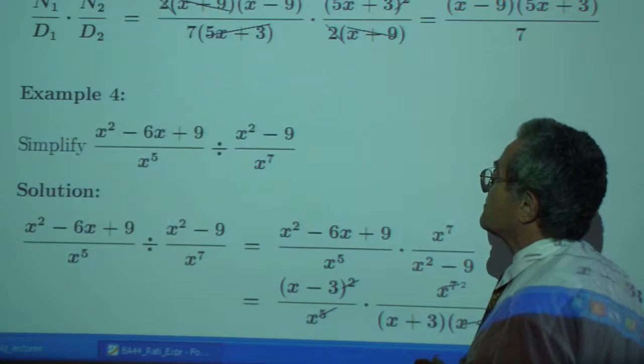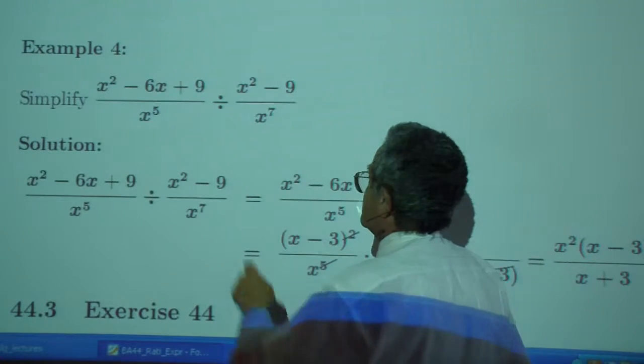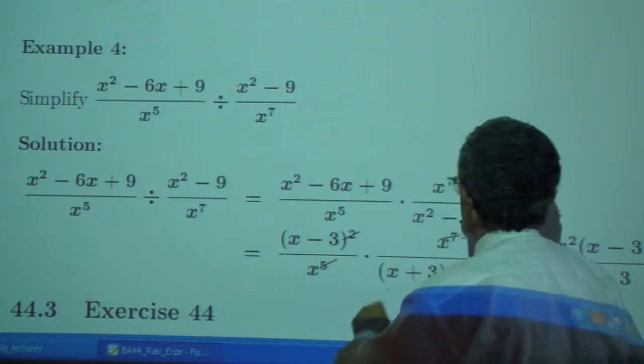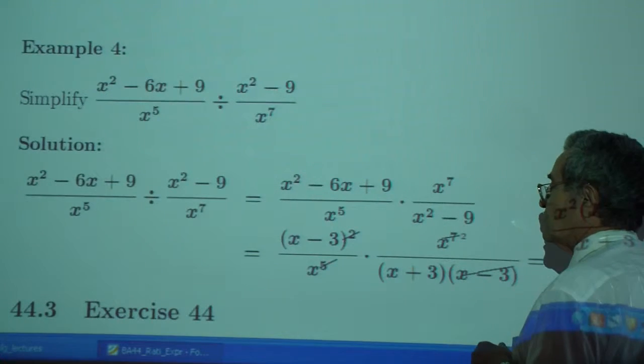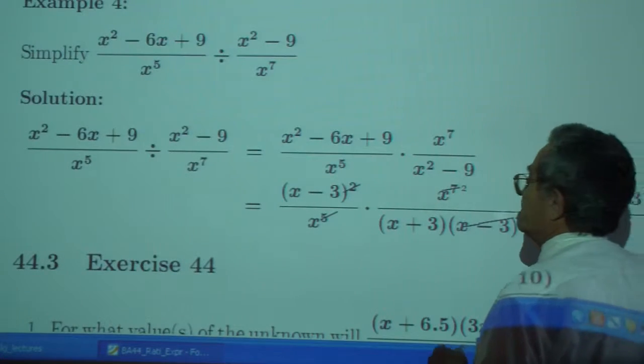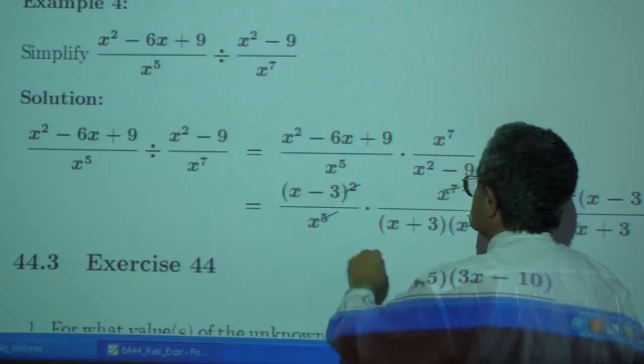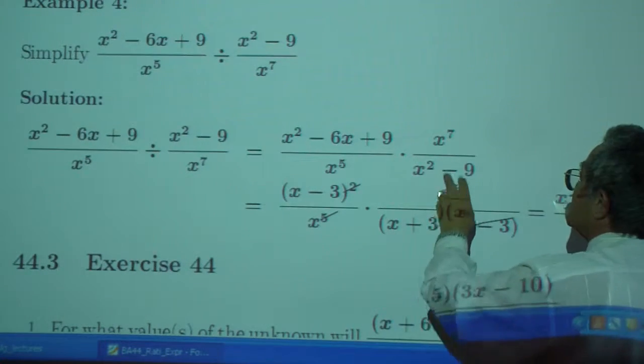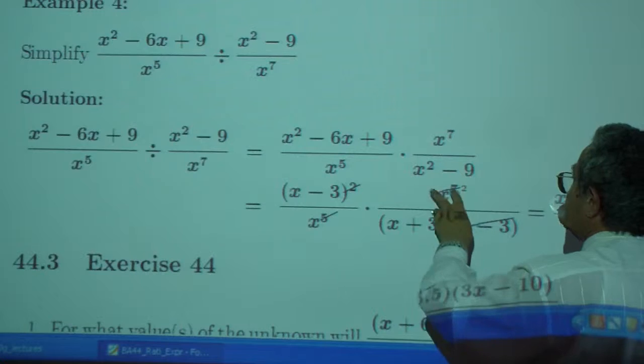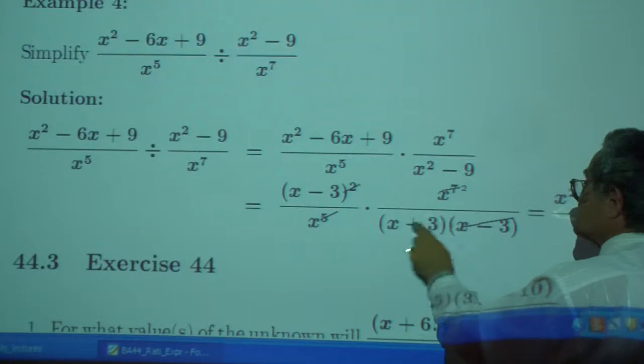Example 4. We want to divide by a fraction, which means we want to multiply by the reciprocal of the fraction. The first fraction is a perfect square. The denominator is just x to the 5. The numerator is x to the 7. The denominator is a difference of two squares.